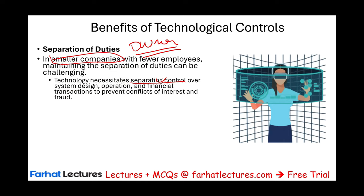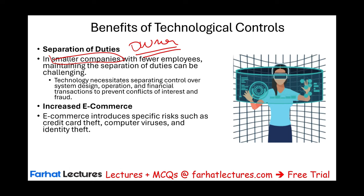People who design the system cannot have access to financial or operational functions, because there could be a conflict of interest. If you can program the system and have access to financial transactions, it's a problem — you could use a backdoor to transfer money to yourself without anyone knowing. Similarly, if you design the system, you should not work in operations because you know the ins and outs of the system.